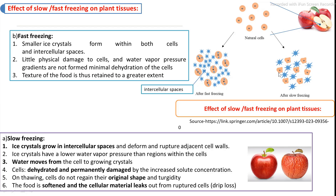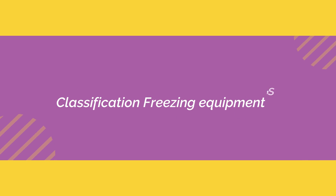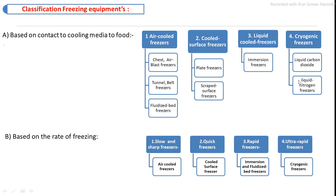In slow freezing, large crystals damage the cells, decreasing texture properties. Freezing equipment are categorized into various groups based on cooling media and rate of freezing. On the basis of cooling media, the four categories are: cold air freezing equipment, cold surface freezers, liquid cold freezers, and cryogenic freezing equipment. On the basis of rate of freezing: slow, weak, rapid, and ultra-rapid freezing equipment.